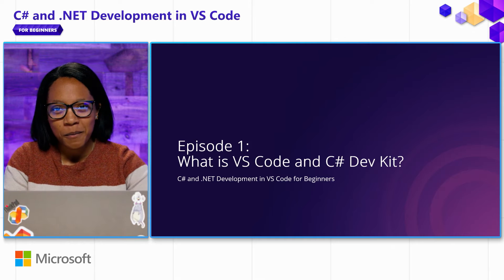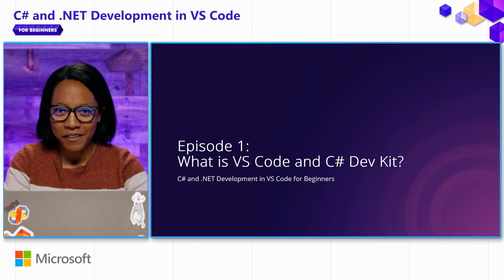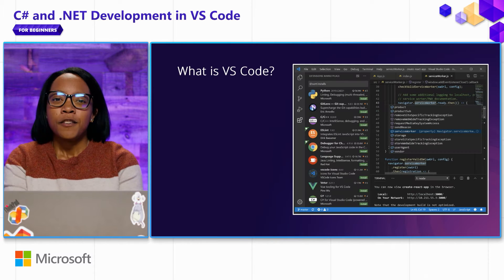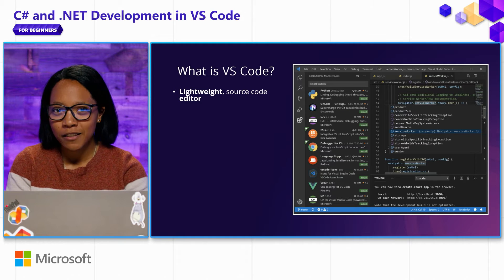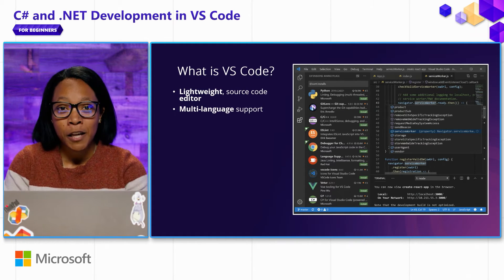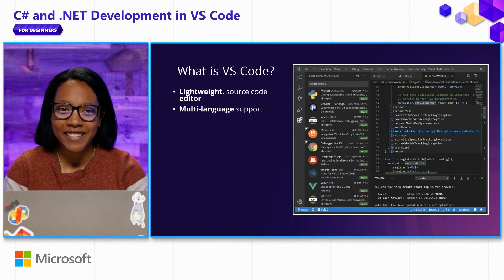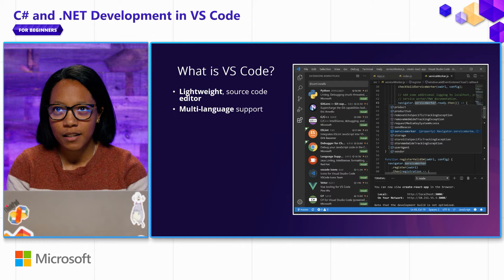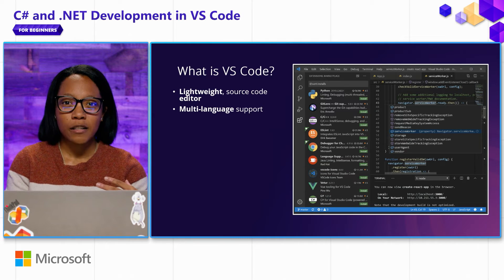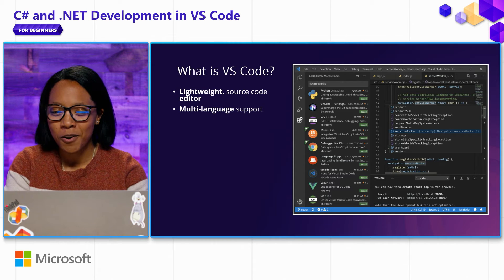Starting from square one, what is VS Code? VS Code, or Visual Studio Code, is a lightweight source code editor. It provides multi-language support such as JavaScript, TypeScript, C++, Java, and C#, of course. This is really nice for cases where you might want to write a web app with a JavaScript front-end and a C# back-end, using multiple languages together — VS Code lets you do all of that.